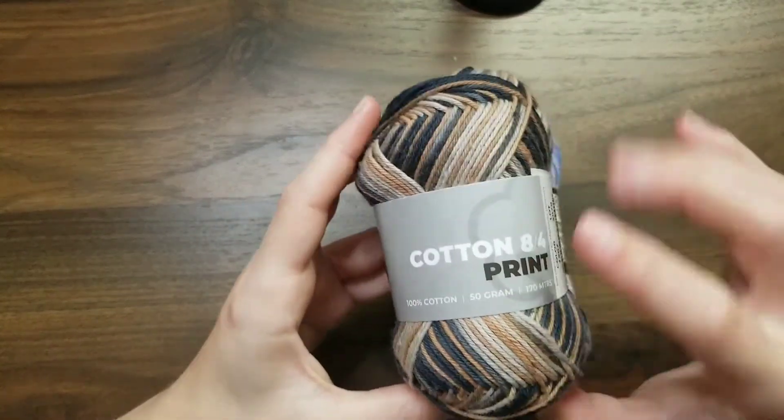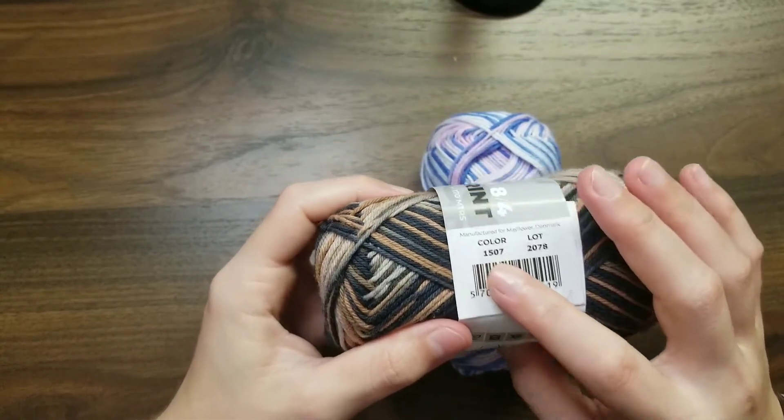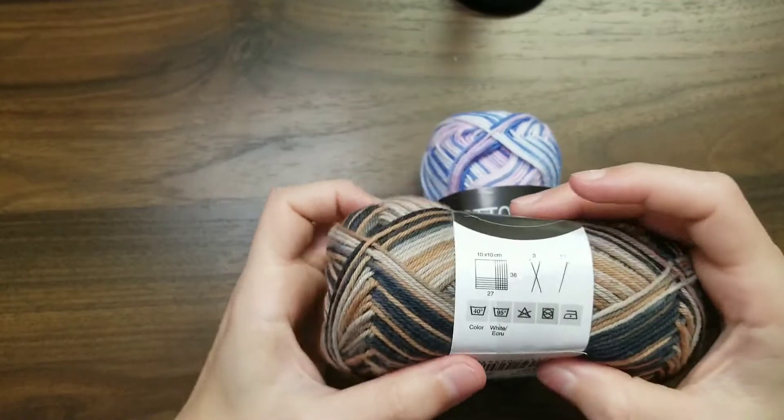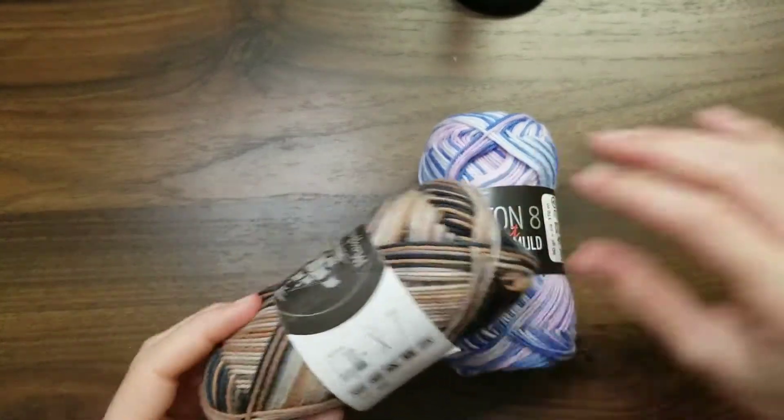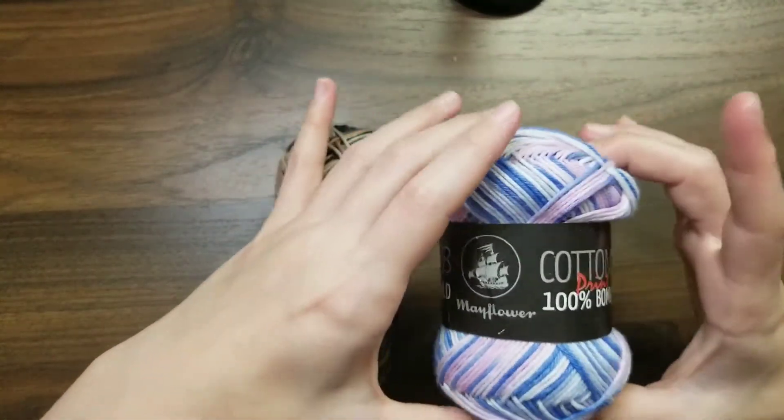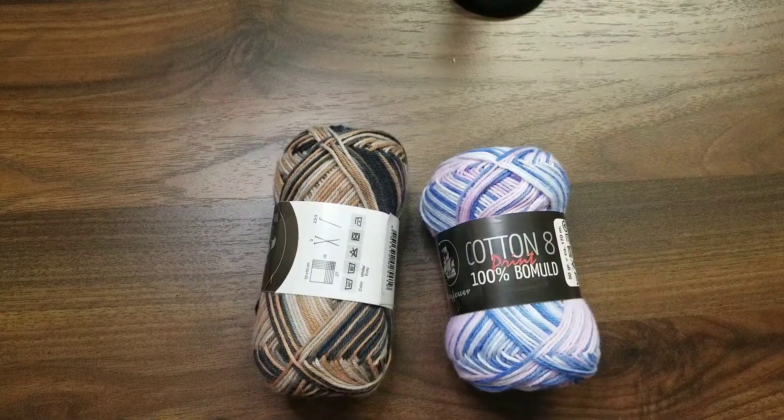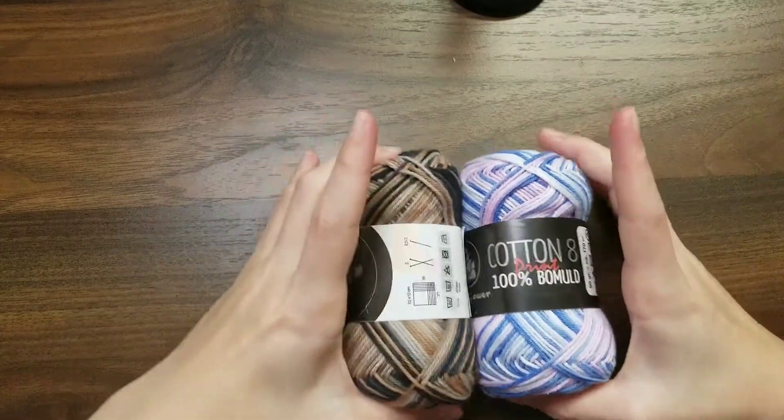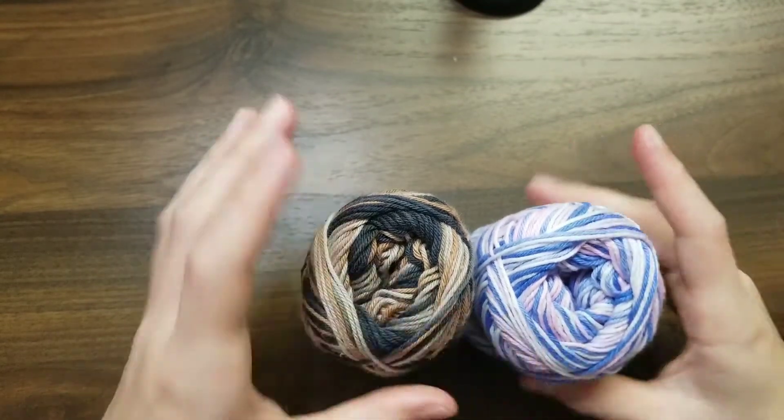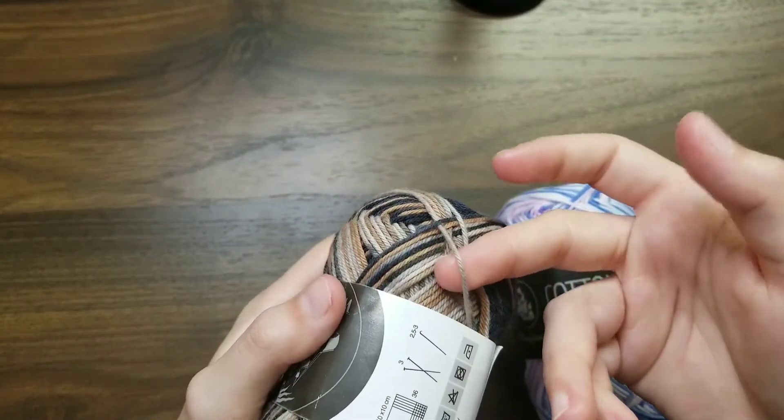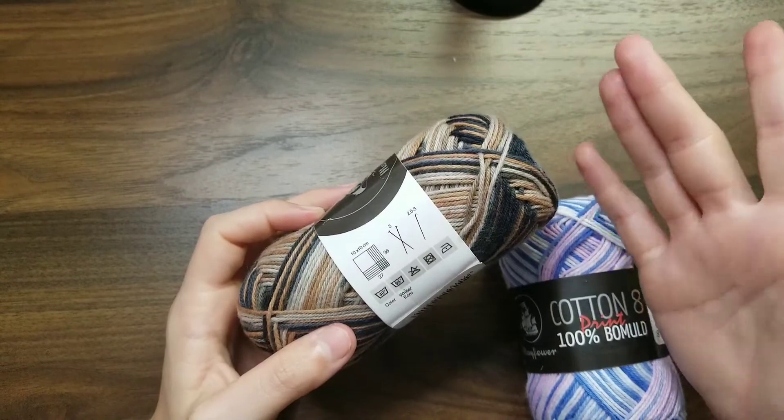And this one right here says Cotton 8-4 Print, and it says 100% cotton, 50 grams, or 170 meters. The color number is 1507, and then it actually shows the color name right here, which is white slash ecru, I think it says. I'm not quite sure. But then you have this one right here that you can see it says Cotton 8-8 Print, 100% Beaumauld. I'm not sure if I'm pronouncing that correctly or not, but I am not quite sure why it would be different when I purchased this, but I don't really mind because the yarn is the same thickness. It has the same feel, and it doesn't show the yarn size category on here, but I would say it is between a 2 and a 3 weight yarn.